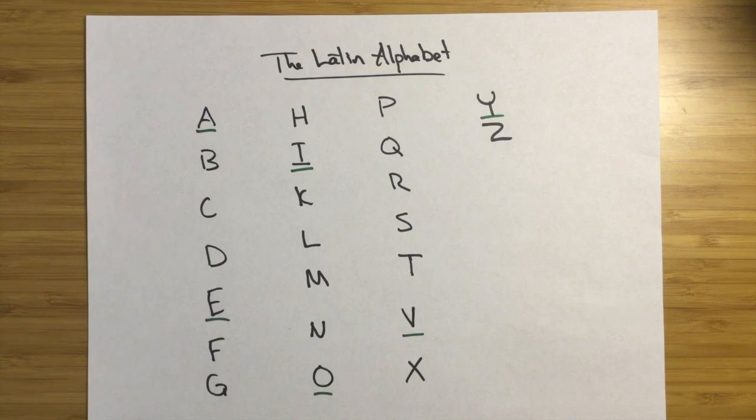Also, Wheelock's Latin talks about some diphthongs. So certain combinations of letters, of vowels that together are pronounced slightly differently. I'll have another video on that, but I think I can simplify that quite a bit too, because honestly, I think Wheelock's Latin makes it a little bit more complicated than it has to be.